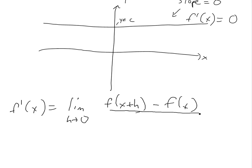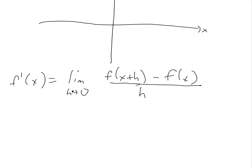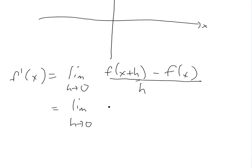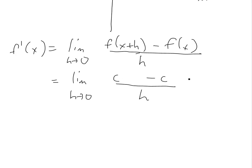It's all over h. And so you plug in the values, you get limit h approach zero. Well, it's always c. So f of x plus h is going to be c. f of x is going to be c. It's always constant, divided by h. Just this cancels. So this has become zero. So you're left with zero.